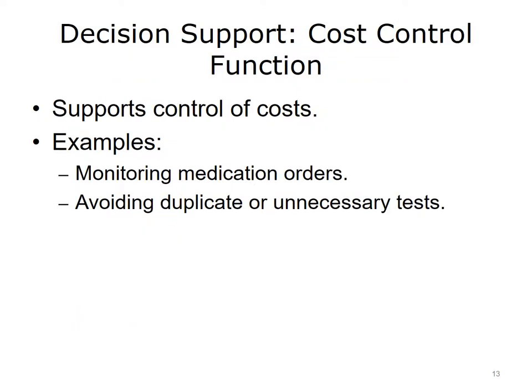Decision support can help control the costs of care. By monitoring prescribing practices for high-cost medications, alerts can suggest lower-cost alternatives. When institutions restrict high-cost drugs, decision rules can ensure indications for use are present. Duplicate or unnecessary laboratory and radiologic testing can be avoided by applying decision rules that warn the prescriber the test has already been ordered or is inappropriate for the particular patient.